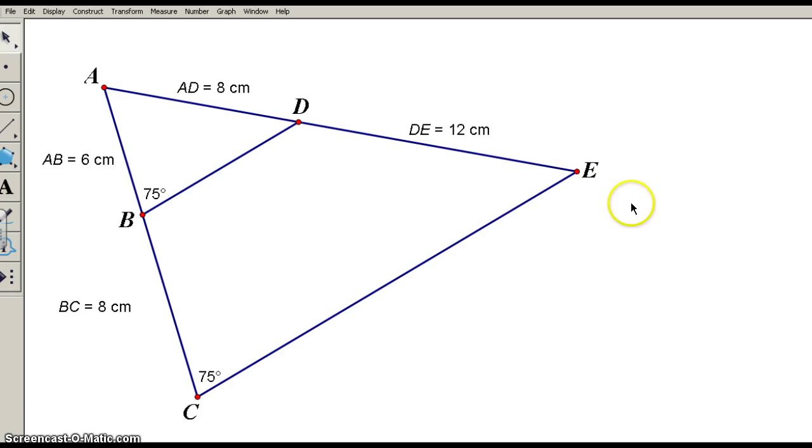So what we have here is one large triangle, triangle ACE, and we have a line parallel, a parallel line in the triangle to one of the sides of the original angle of the triangle. So BD is parallel to CE.